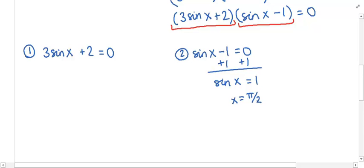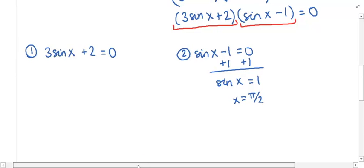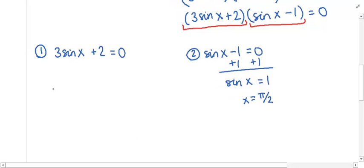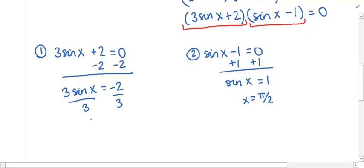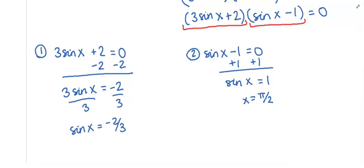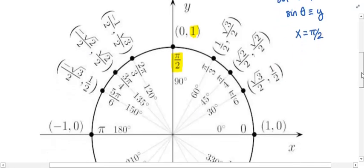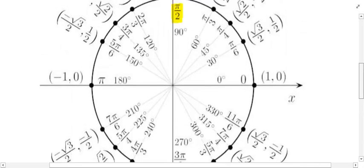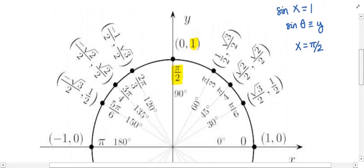Now I need to handle the other equation: 3sin(x) + 2 = 0. This is a linear trigonometric equation — one trig function, raised to the first power — so we isolate it. Moving the 2 over gives 3sin(x) = −2, then dividing by 3 gives sin(x) = −2/3. When I go back to the unit circle, no angle has a y-value of −2/3.